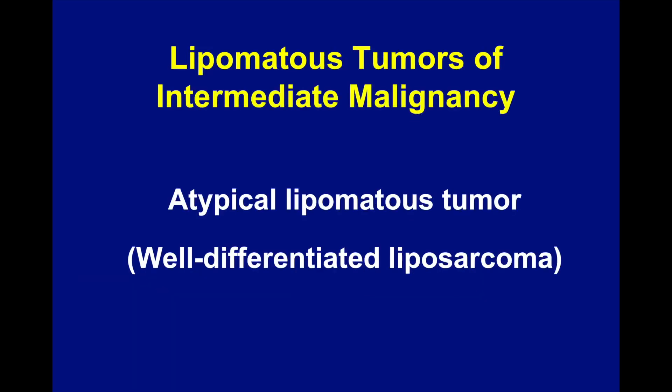Then we have the lipomatous tumors of intermediate malignancy. In soft tissue, at least back in 2013, there was a push to initiate these tumors of intermediate malignancy. Generally, when you categorize a tumor in intermediate malignancy, you have a tumor that frequently recurs and rarely, if ever, metastasizes. When talking about fatty tumors, the one lesion in this category goes by several names — known as atypical lipomatous tumor or well-differentiated liposarcoma. People go back and forth between these terms, but you can consider these terms totally equivalent and synonymous with one another. What I do in practice is use both of these terms so that anyone reading the report will know what I'm talking about.